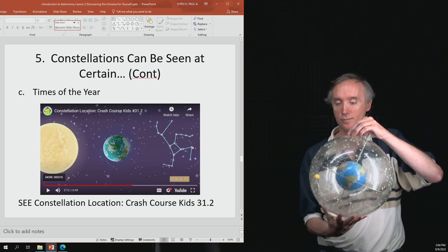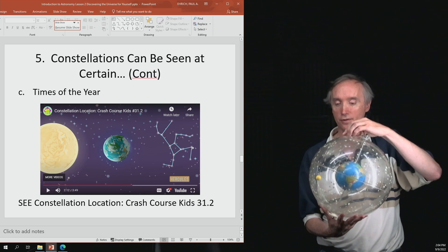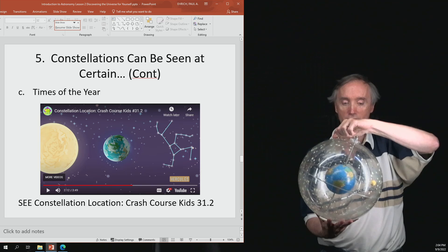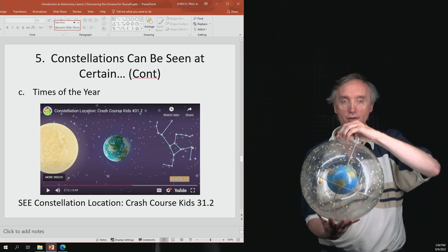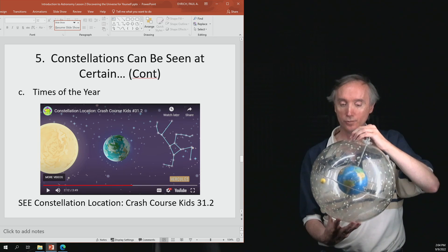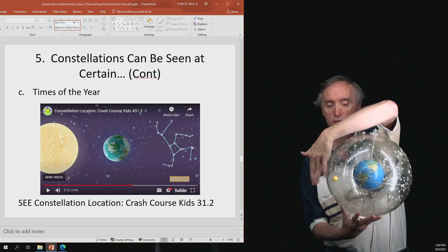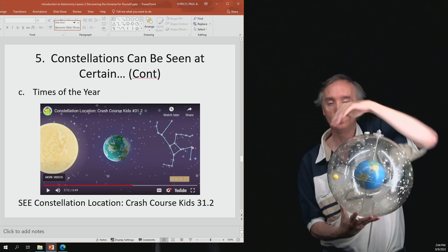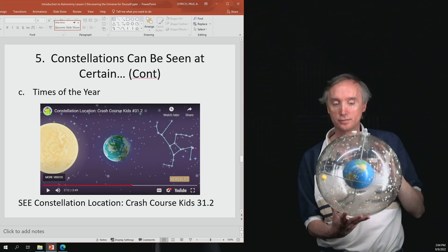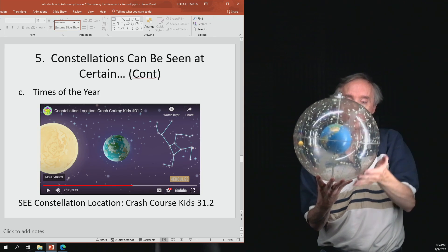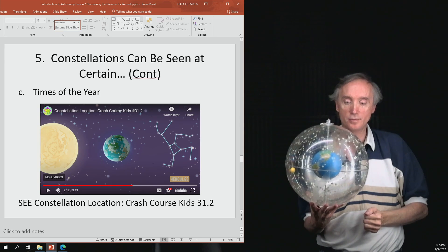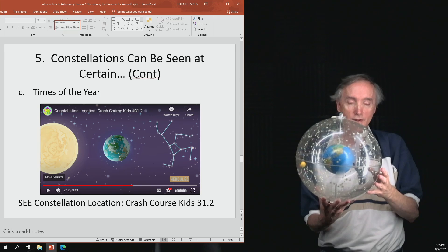So here, I can take my sun and I can move it around. Now this gives you the idea that the sun moves around the Earth, but it doesn't. But with it in this position, any constellation over here, you wouldn't be able to see. But constellations on this side, you would be able to see because this would be the night side of the Earth.